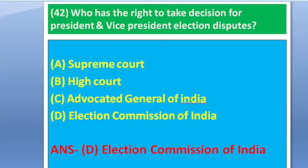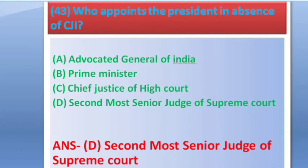Question number 43: Who appoints the President? Options: A — Advocate General of India, B — Prime Minister, C — Chief Justice of the High Court, D — Second most senior judge of the Supreme Court. The answer is option D — Second most senior judge of the Supreme Court.